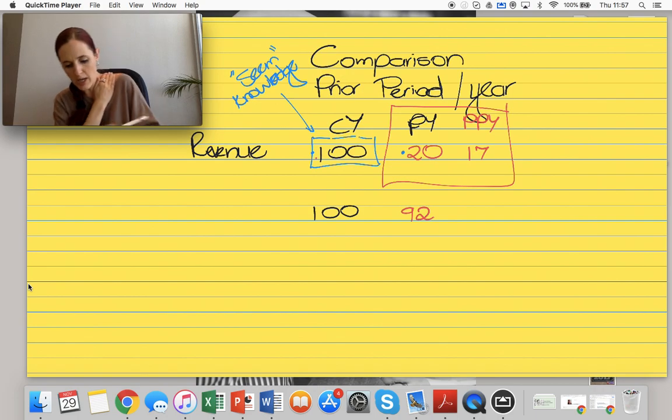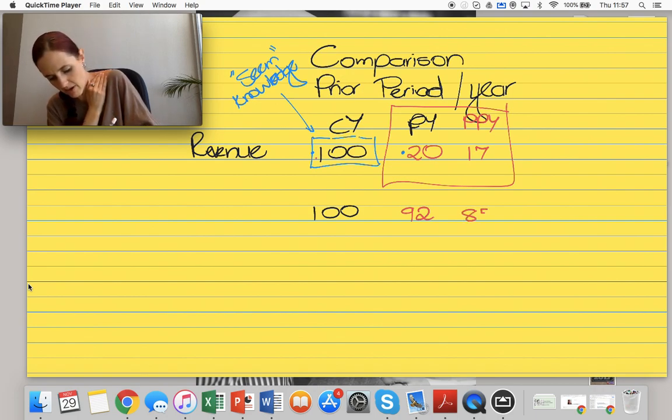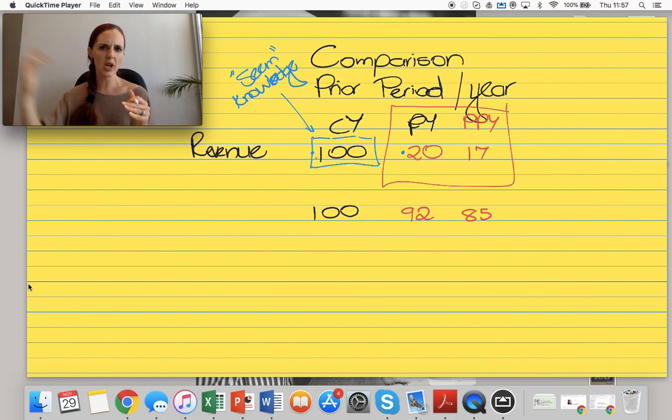Taking a look at the prior year, maybe their revenue was 85. And I can start to see, oh, this makes sense. There's a bit of a trend. There's an increase, but it's incremental. It's not exponential. How do I feel about that? I feel like that seems okay. I feel like that 100, and keeping in mind that I'm auditing this number, I feel okay about it.